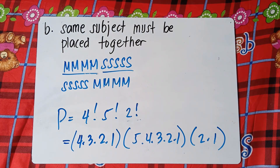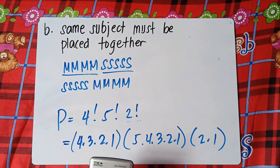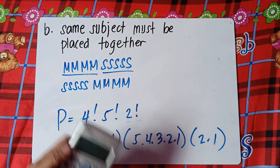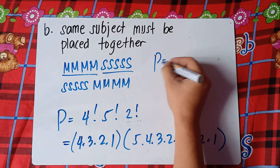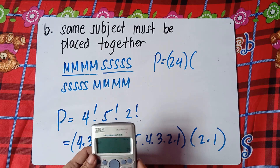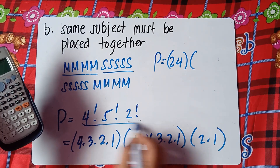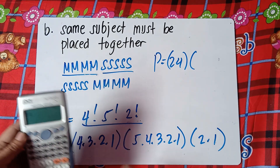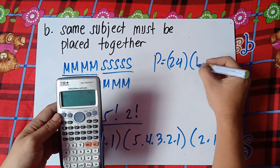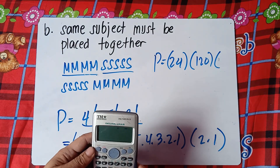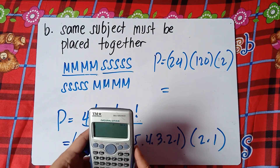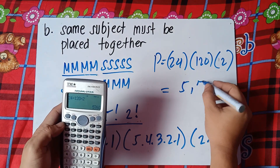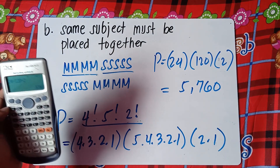Four factorial is 24, multiplied by five factorial which is 120, times two factorial which is two. So we have 24 times 120 times 2, giving us 5,760 ways.